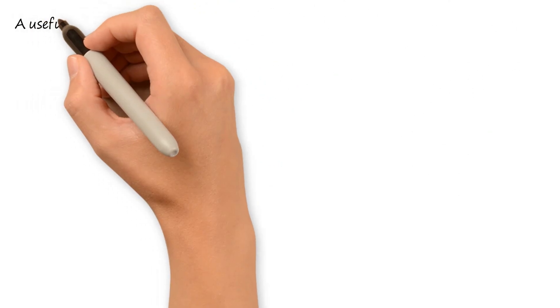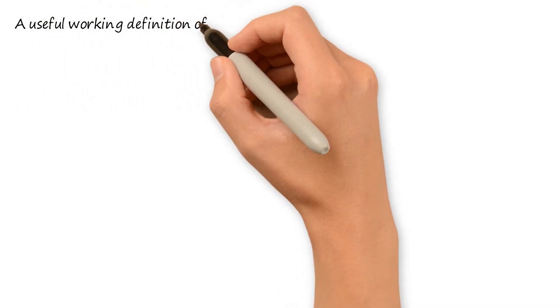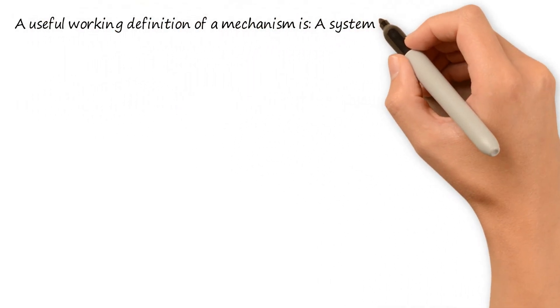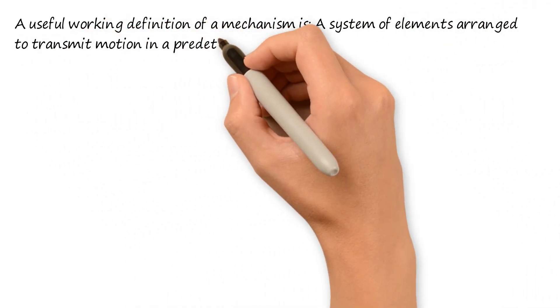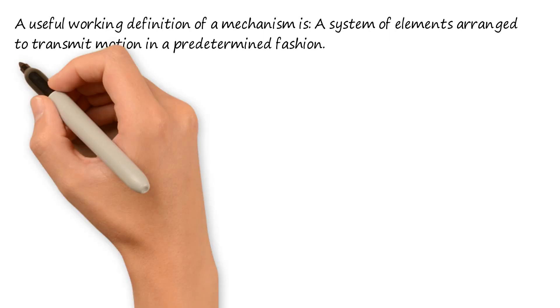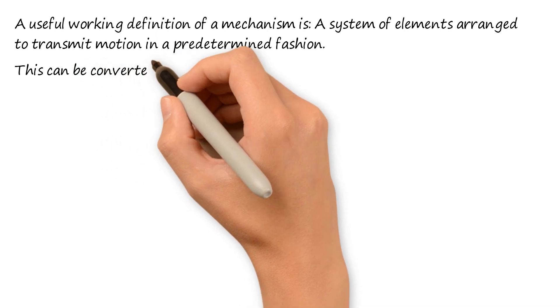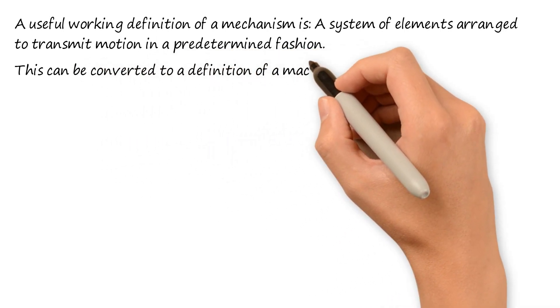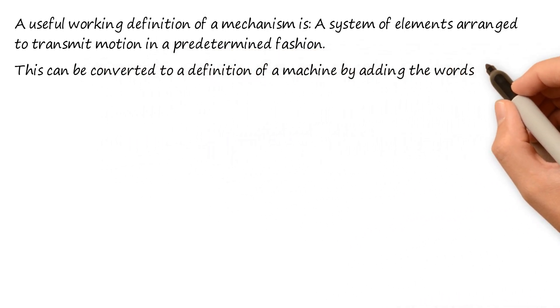A useful working definition of a mechanism is a system of elements arranged to transmit motion in a predetermined fashion. That is, it is a combination of number of bodies assembled in such a way that the motion of one causes constrained and predictable motion to the others. This can be converted to a definition of a machine by adding the words work and energy after motion.